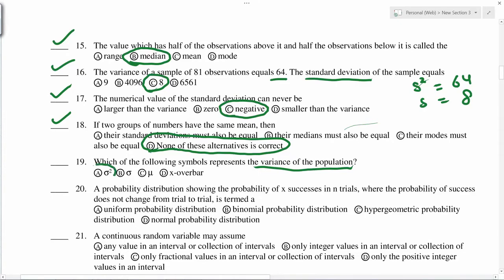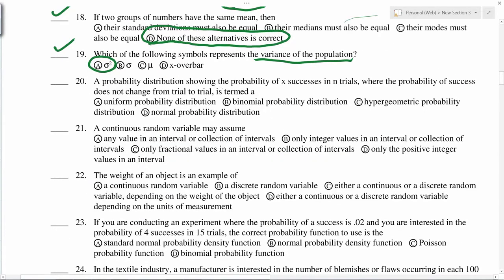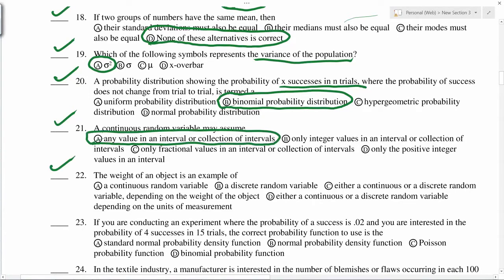The probability distribution showing the probability of x successes in n trials, so this is binomial distribution. Continuous random variable may assume any value in an interval. Weight of an object is an example of continuous.